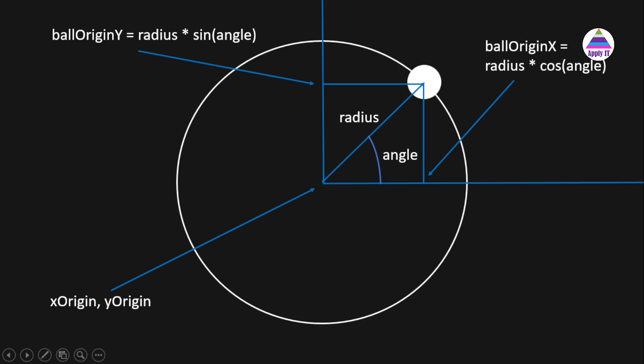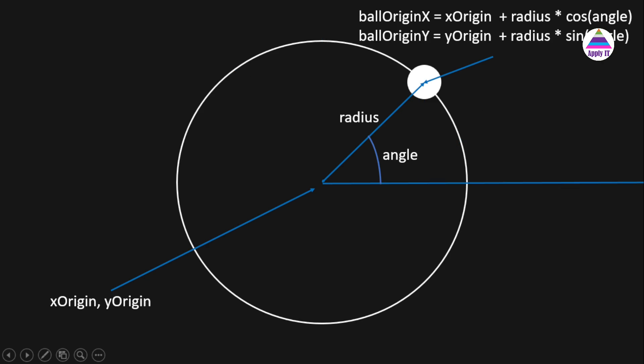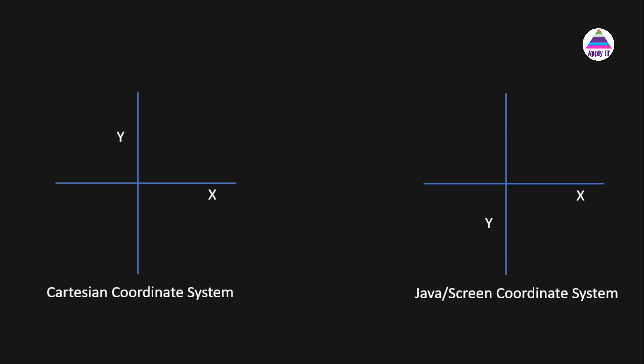...radius multiplied by cos(theta), and the y value will be radius multiplied by sin(theta). Here, theta is the angle the circle makes with reference to the x-axis. However, ballOriginX and ballOriginY are values with reference to origin (0, 0), but our origin is at xOrigin and yOrigin. So, to get the actual values of ballOriginX and ballOriginY, we need to add xOrigin and yOrigin: ballOriginX = xOrigin + radius * cos(angle).